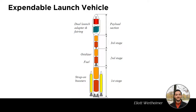The first stage is larger because it needs to compensate for the biggest gravity losses and aerodynamic losses. Once it is empty and has done its job, it separates from the main rocket to let the second stage ignite. Once the second stage has done its job, the third stage ignites to place the payload into its orbit.